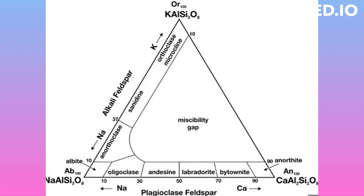Polymorphs are minerals with the same chemical formula but different structures. Sanidine, orthoclase, and microcline are polymorphs that form the potassium feldspar group. They have the same chemical formula but different structures, where microcline crystallizes in the triclinic system whereas orthoclase and sanidine crystallize in the monoclinic system.